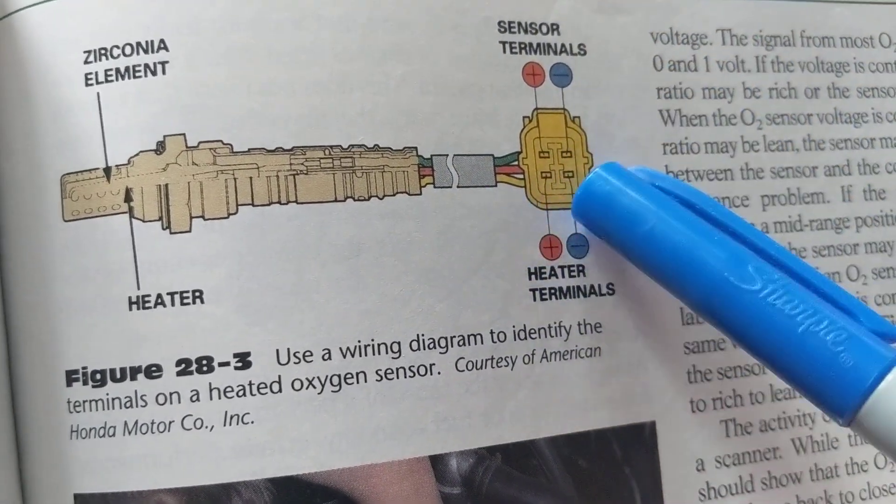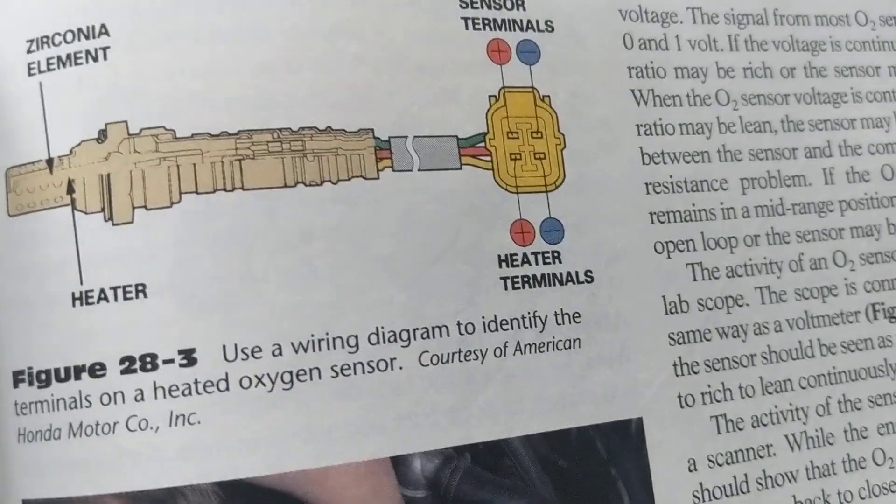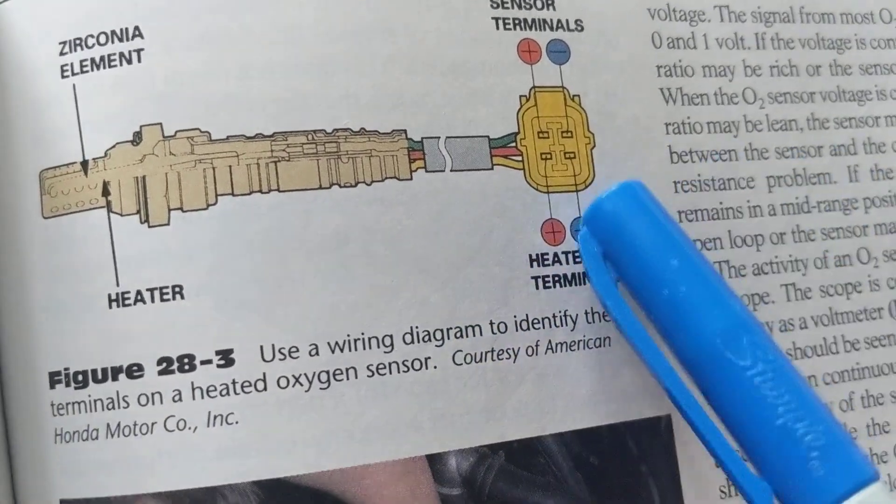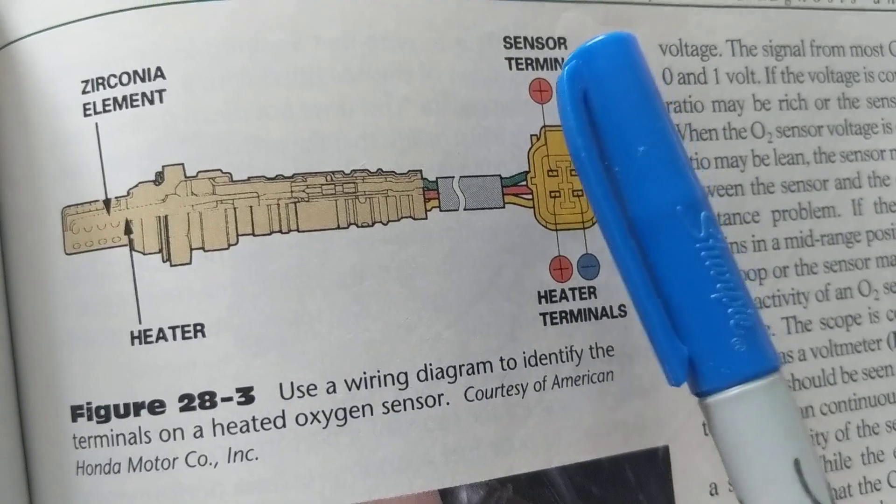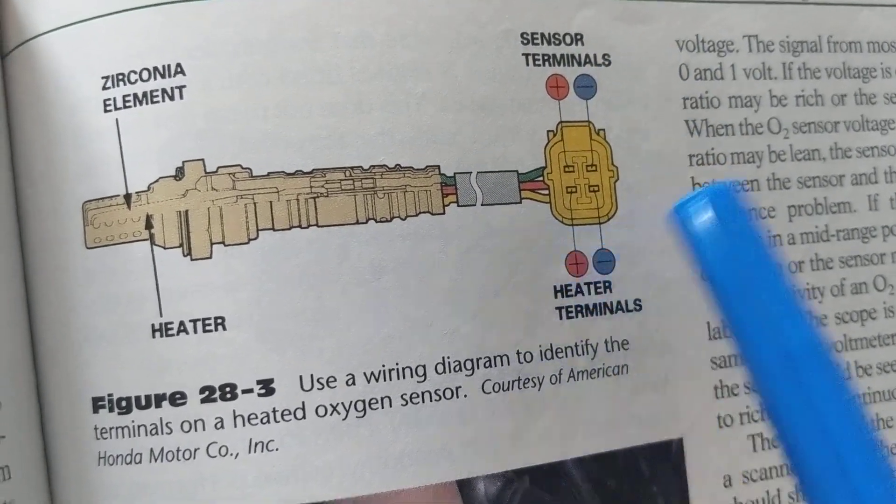This is the heater. It has to heat up the oxygen sensor to about 600 or 700 degrees, like a toaster oven. You have a heater element. This requires two heater terminals and the sensor itself. So therefore, there are four terminals. Sometimes there's even five.